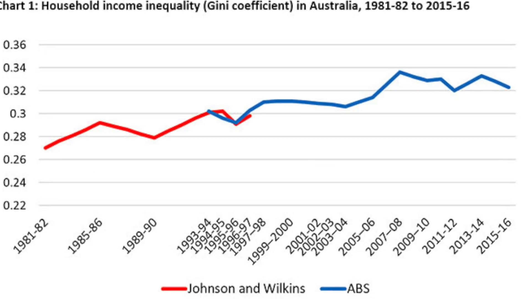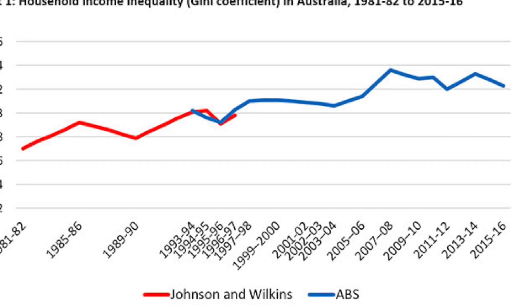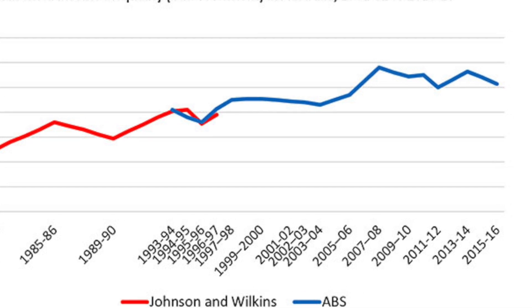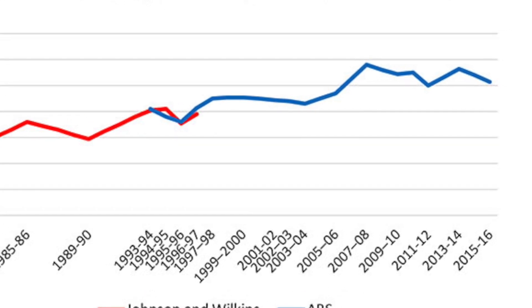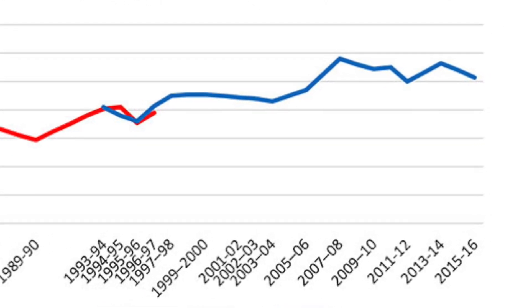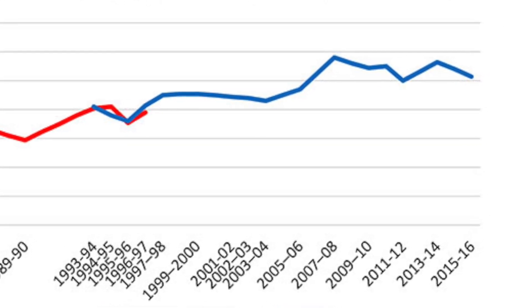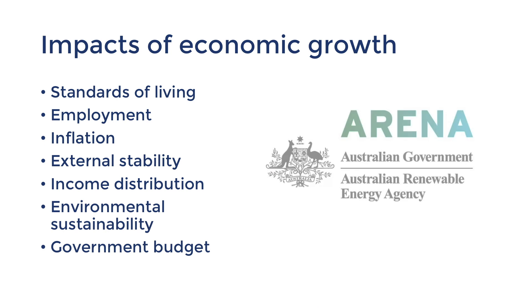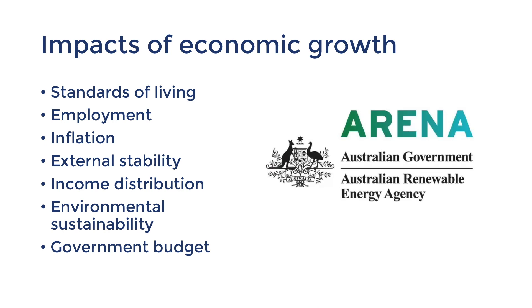Indeed, the Gini coefficient in 2013 indicated a more equal income distribution after tax, despite higher economic growth. With a budget surplus, governments could also afford to subsidize renewable energy sources and other initiatives for ecological sustainability.